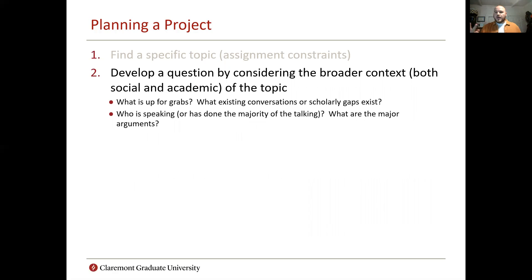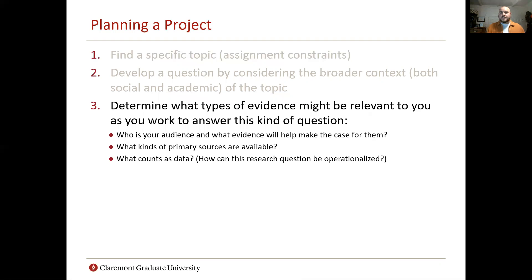Next, think about two contexts for your question: the broader social context of your topic, and then the academic context. Are there existing conversations or scholarly gaps that you want to address? Are there people who are doing most of the speaking — there often are — and what are the major arguments that have been made for or against some aspect of your topic? Next, start thinking about evidence. You're going to have to make an argument to answer this research question. So, what will count as evidence and data in your analysis? Think about who your audience is, what kind of evidence will help make your case, what kinds of primary sources are available, and how can you operationalize some of these potential research questions.